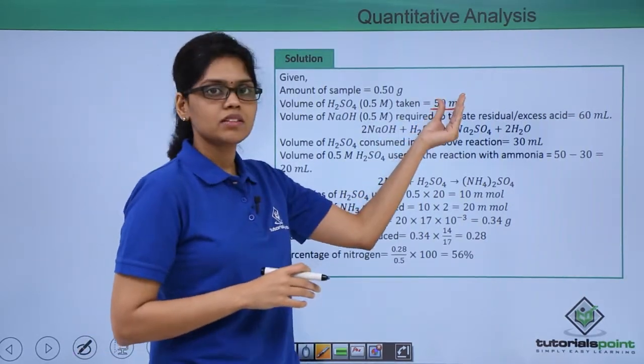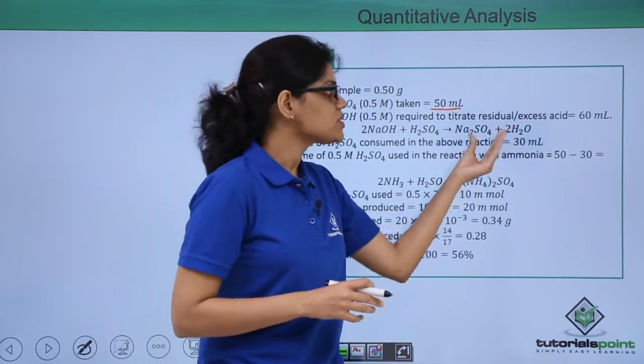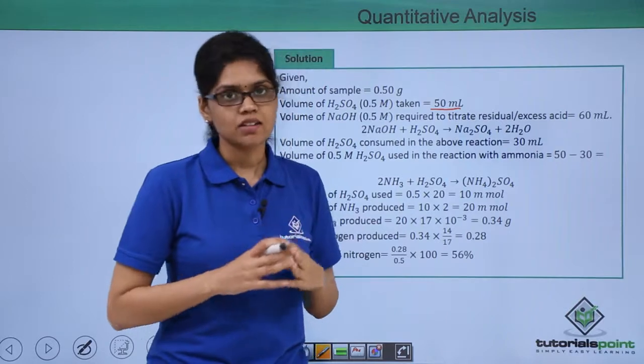That is 50 minus 30, you get 20 ml of sulfuric acid. Now the reaction between sulfuric acid and ammonia is where you have 2 moles of ammonia reacting with 1 mole of sulfuric acid giving us ammonium sulfate.